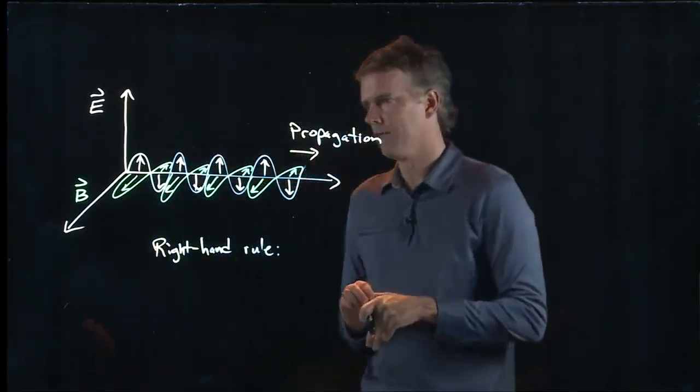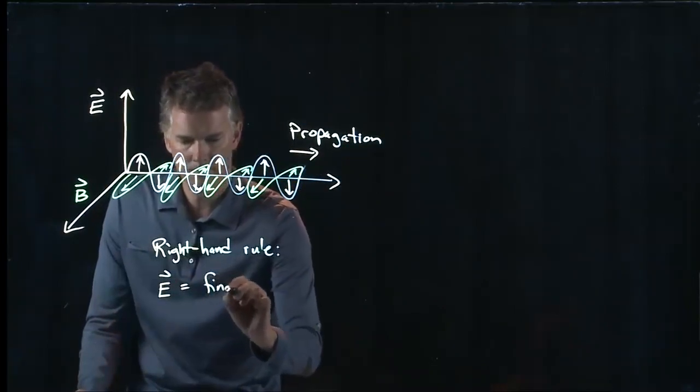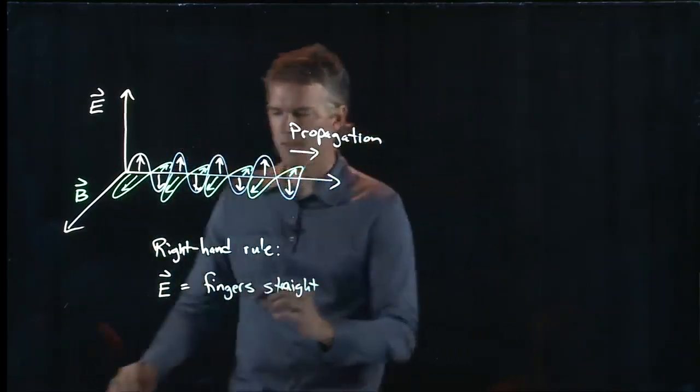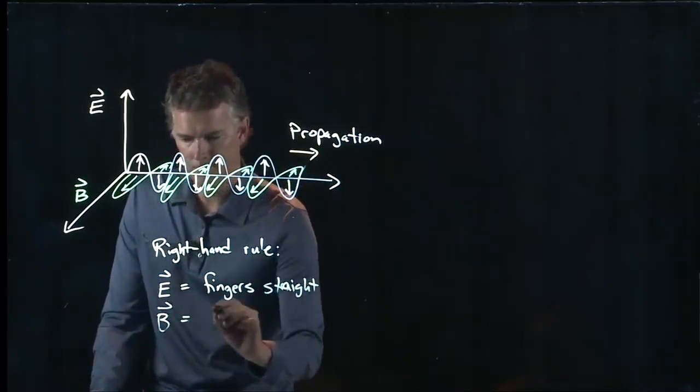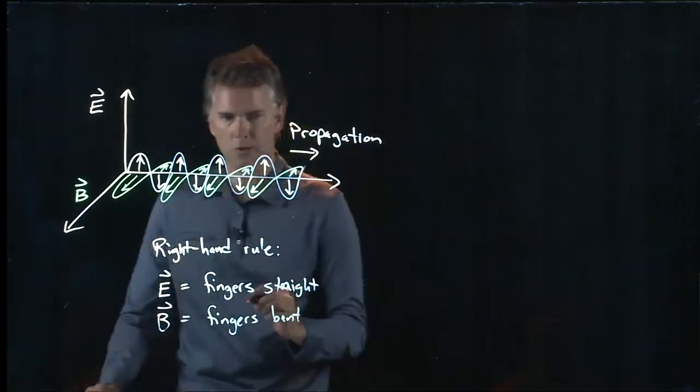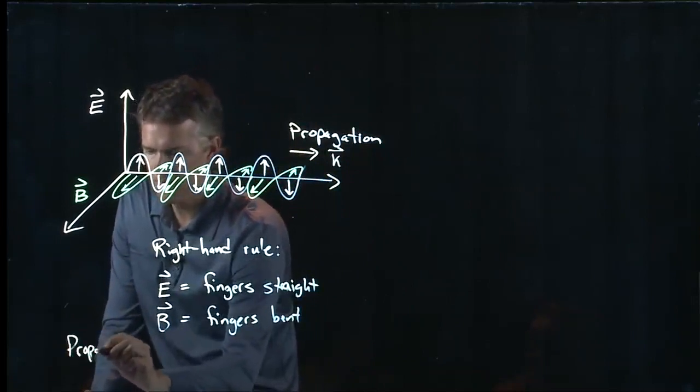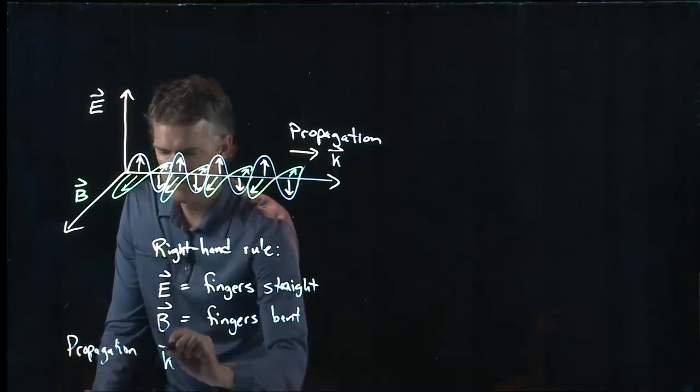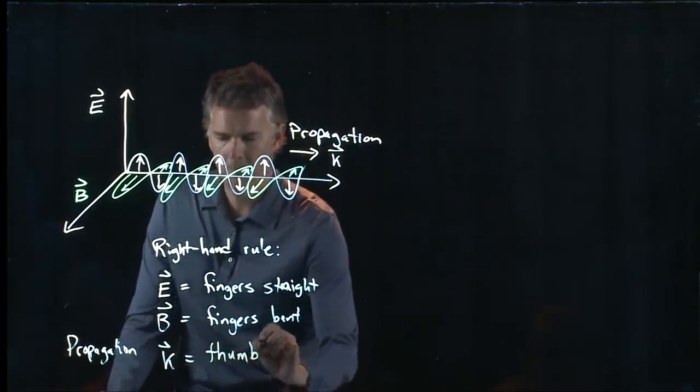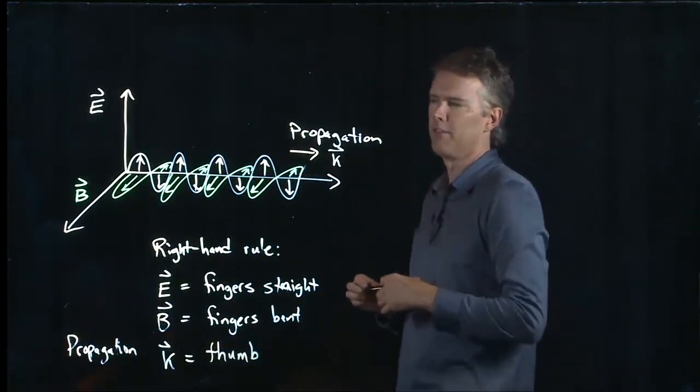And to figure out how to calculate the propagation direction, we can again go back to our right hand rule. So the right hand rule is the following. You bend your fingers in the direction of B. And then the propagation direction, which later on we're going to learn is actually given with a K, propagation K, is in fact the direction of your thumb.